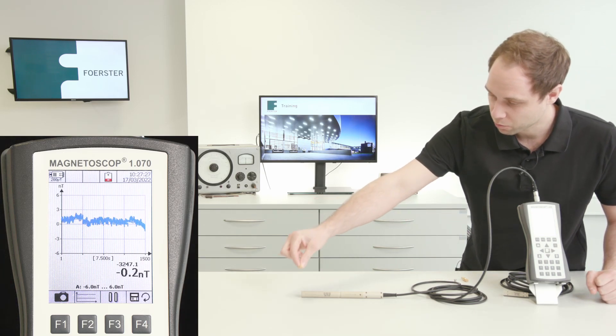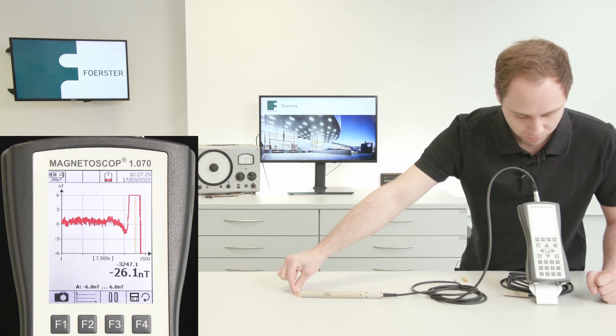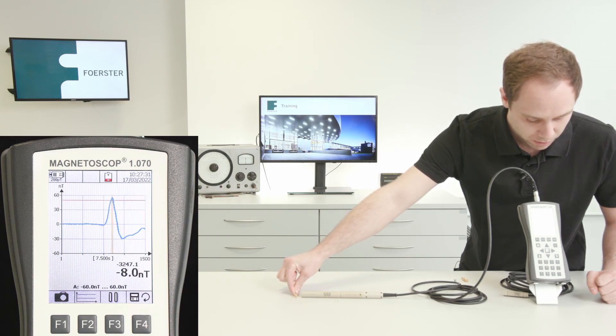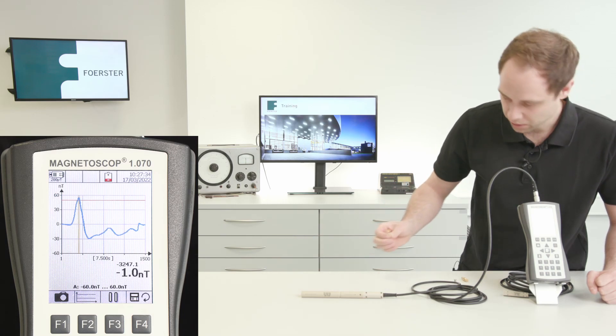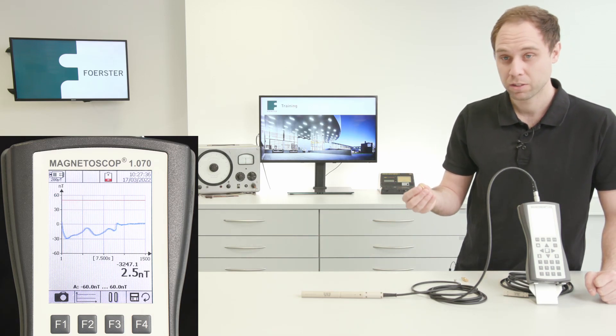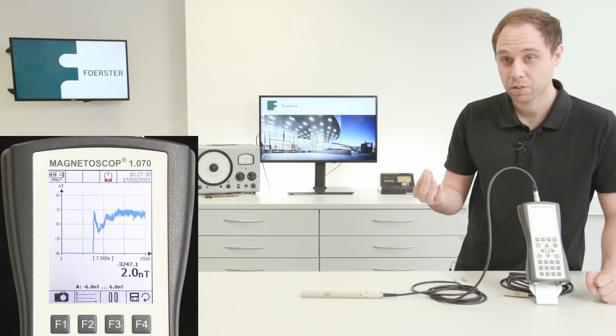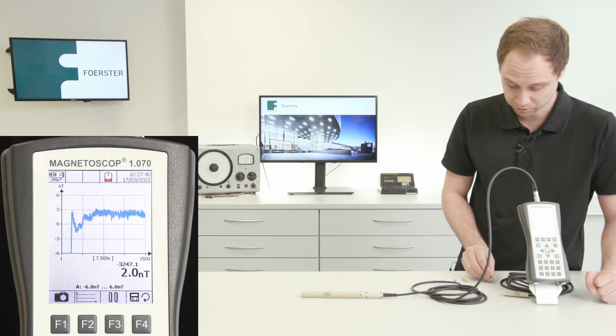Now I can move this part in front of the probe. We see this part causes 22 nanoteslas, so there's a small residual field. This component cannot be used in an MRI system.